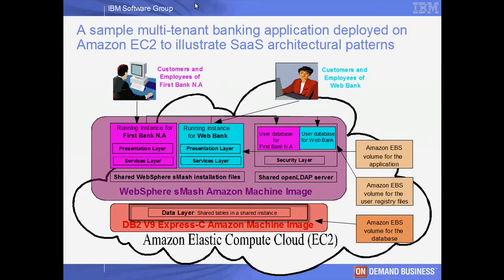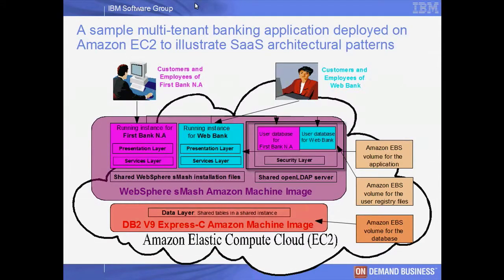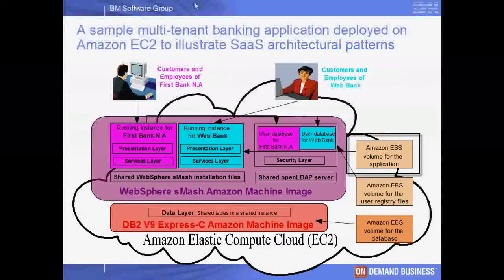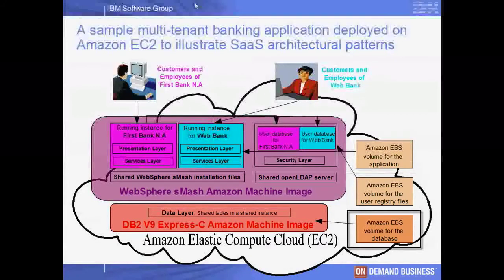The sample application also includes a data layer comprised of shared tables in a shared DB2 database instance, a security layer comprised of a shared OpenLDAP server with isolated user databases for each tenant, and two Amazon Elastic Block storage volumes which house the SMASH application files, the OpenLDAP database files, and the DB2 database tables. Next we will show these functional layers of the sample multi-tenant application.